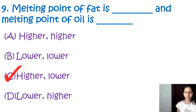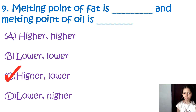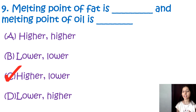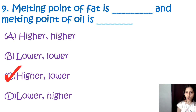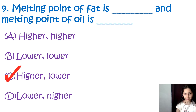Fats generally have higher melting points compared to oils. Oils are liquid at room temperature and contain a higher proportion of unsaturated fatty acids, which gives them a low melting point. Fats have a higher proportion of saturated fatty acids, giving them higher melting points, which causes fats to be solid at room temperature. The correct option is C: melting point of fat is higher compared to that of oil.